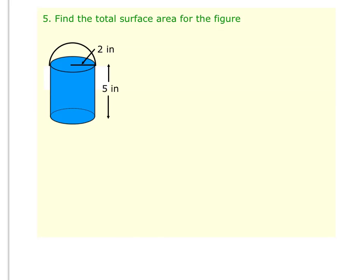In these last two problems we're going to find surface area and volume for figures that are made up of more than one three-dimensional figure. So if you look at number five, you can see that it is a shape that's made up of a cylinder with a hemisphere on the top of it.